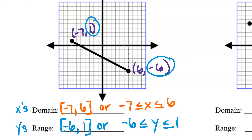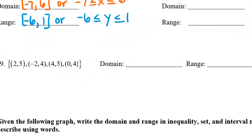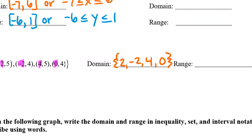Number nineteen is domain and range from a list of points. Domain is still the x-values, so list all x-values in curly brackets: {2, -2, 4, 0}. Even if values repeat, only list them once. The range is the y-values: we have 5, 4, another 5, and another 4, so the range is just {5, 4} — you only list each number once.